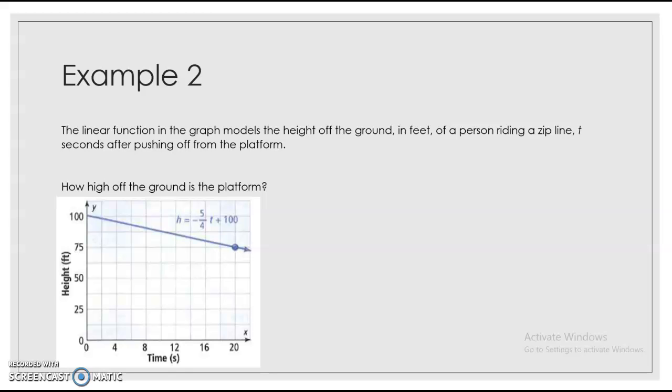All right. So then example two, the linear function in the graph models the height off the ground in feet of a person riding the zipline at t seconds after pushing off from the platform. So you've got an equation here, right? We've got our graph, right? It's asking how high off the ground is the platform. So it models the height off the ground. And we are starting from pushing off from the platform. So this is our platform.